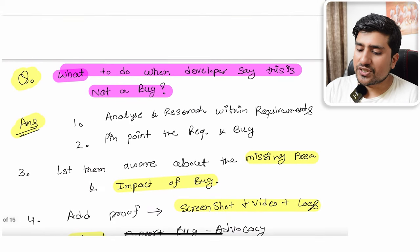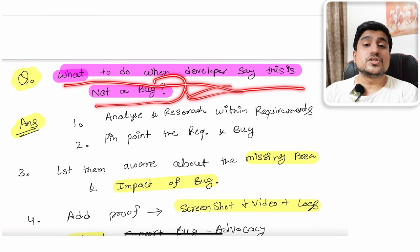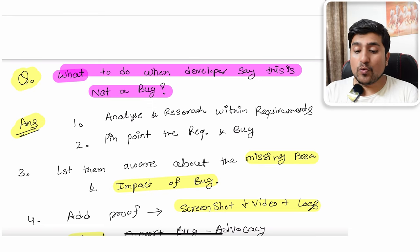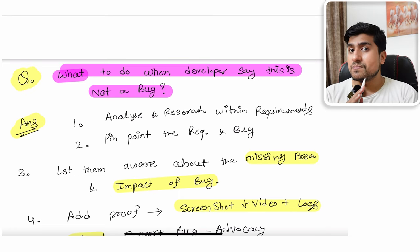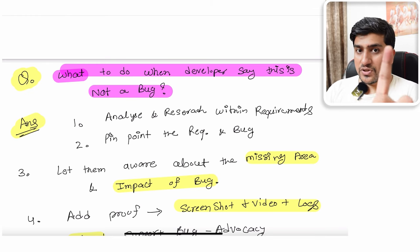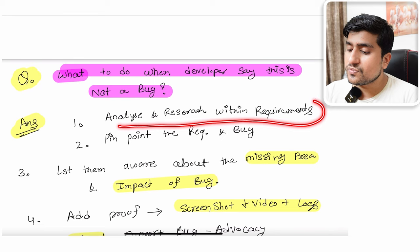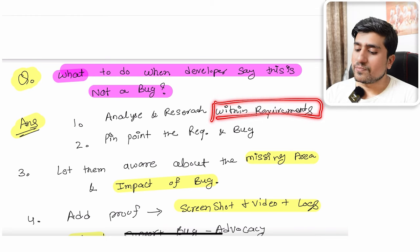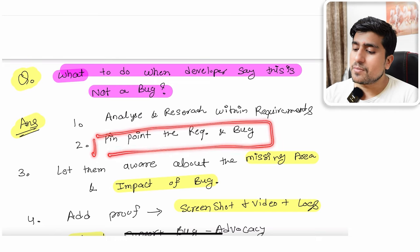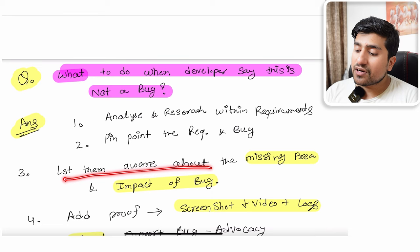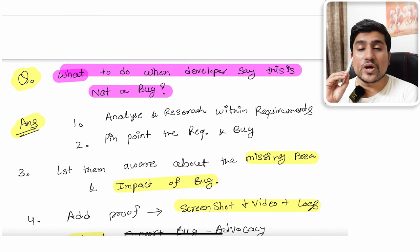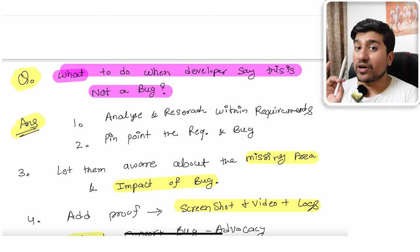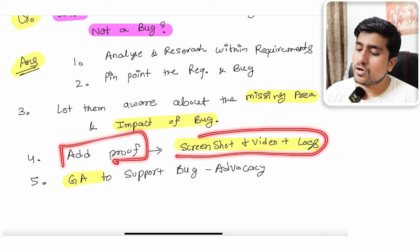The next question is: what do you do when a developer says 'this is not a bug'? Interviewers want to check what actions you would take. The first thing is to analyze and research within the requirements — check whether the bug you raised is covered by the requirements or not. Pinpoint the exact requirement and the bug. Let the developer know about the missing area and the impact area of the bug, including how many users will be affected.